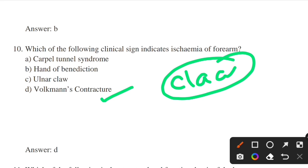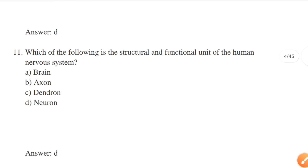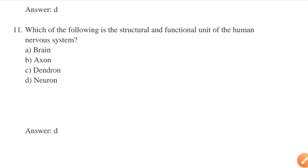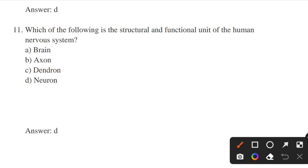Which of the following is the structural and functional unit of the human nervous system? Options: brain, axon, dendron, neuron. Answer: option D — neuron. Neuron is the nerve cell with all its branches. It is the structural and functional unit of the nervous system. Its longest size is 100 centimeters — the largest body cell of a human.